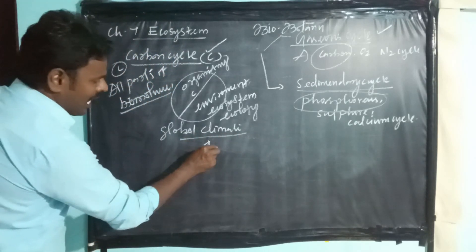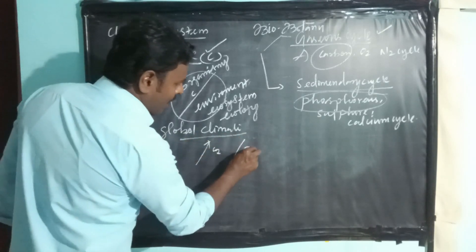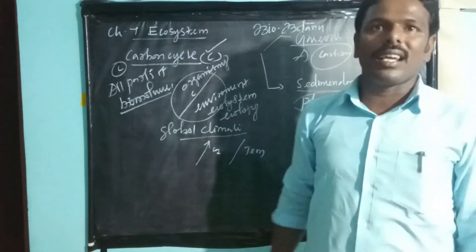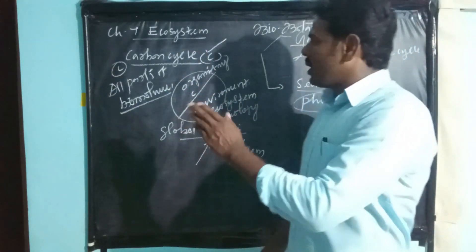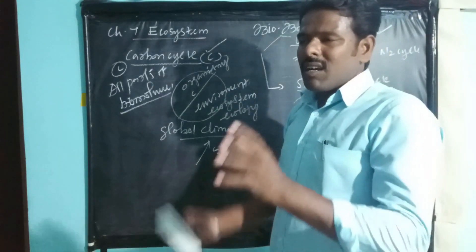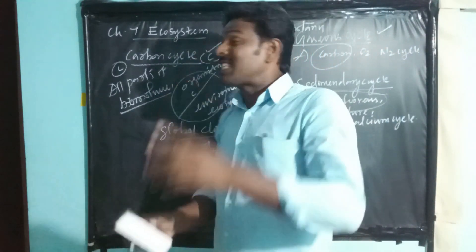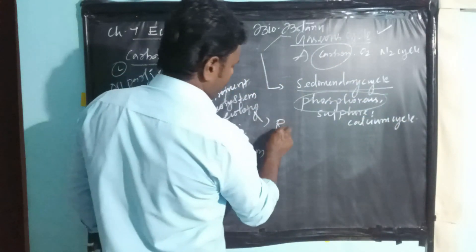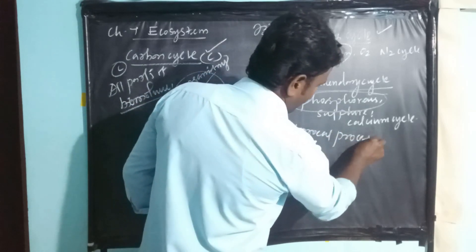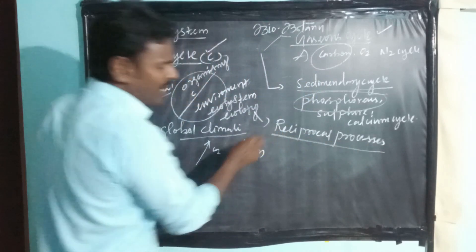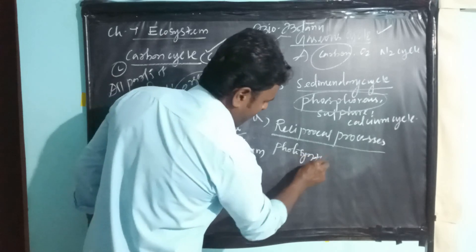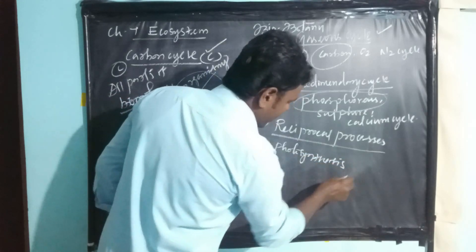The increases in the carbon dioxide level lead to increases in temperature and changes in climate. The cycling of carbon between the organism and the environment involves two reciprocal processes — photosynthesis and respiration.